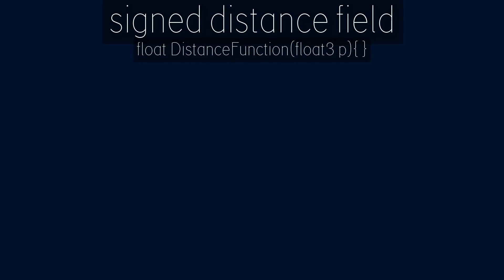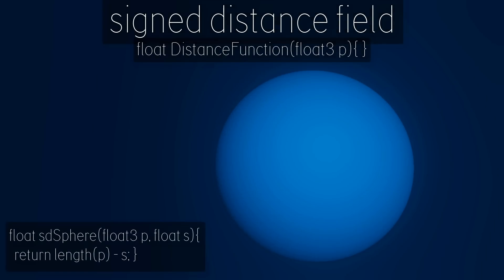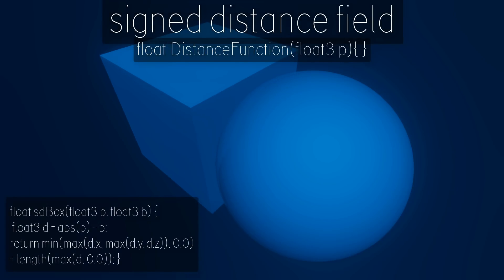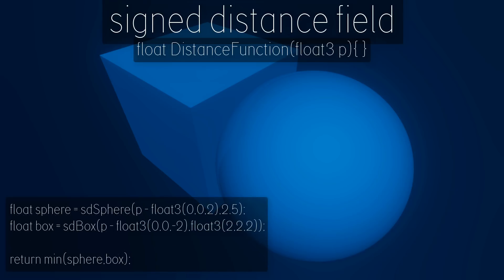Let's take a dive inside the signed distance field, which is a float function with a float3 position input. This is the current ray march position. The output float value tells us if we have hit the distance field or not. We can define a surface by writing a signed distance function. The easiest to start with is a sphere — nothing more than a position and a certain scale or radius. Functions output a minus value if we are inside the surface, and we only want to draw the surface if we have a negative output. Now let's add a box to the scene. To show both the sphere and the box we need to return the minimum result of both primitives in the distance field function.